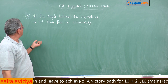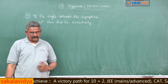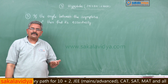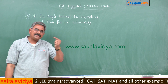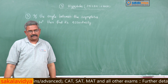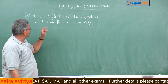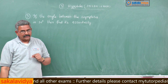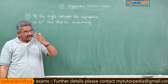If theta is the angle between the asymptotes, then theta is given by the formula 2·sec⁻¹(E), where E is the eccentricity of the hyperbola. So 2·sec⁻¹(E) = 30, which gives sec⁻¹(E) = 15 degrees.